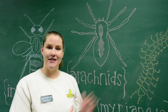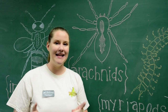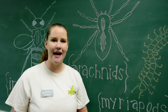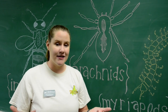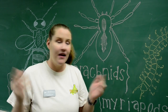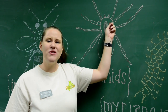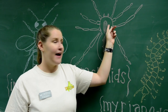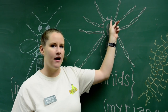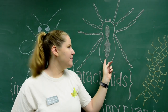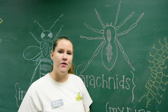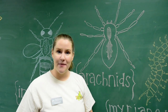Now arachnids are a little bit different. They'll have eight legs but no wings and no antennae. They also may not have eyes, or they can have up to ten. They also have a fused head and thorax called a cephalothorax, and this is where their fangs are. On the bottom they have their abdomen, where spiders have a spinneret where they can make their spider webs.